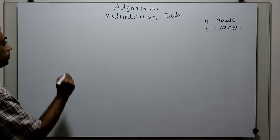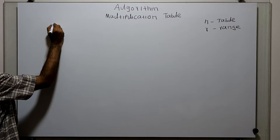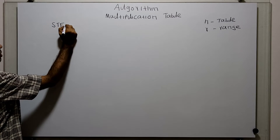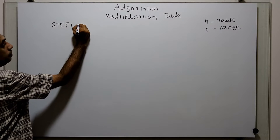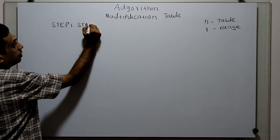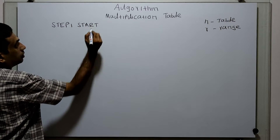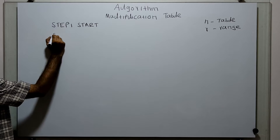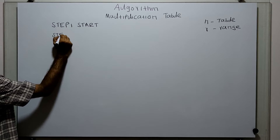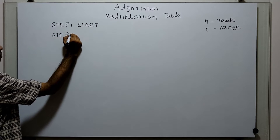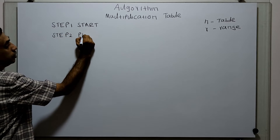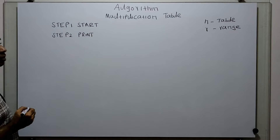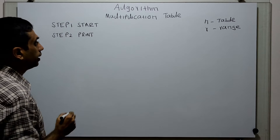We will write the algorithm. Step 1 is the logical start of the algorithm. Step 2: print and ask the user to enter the table and range.